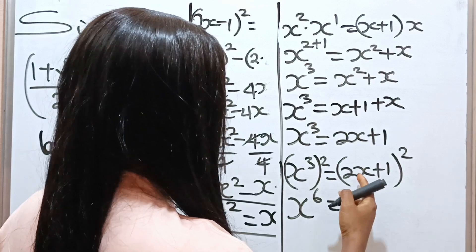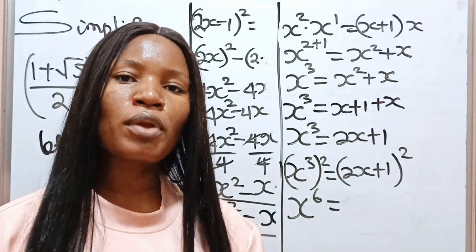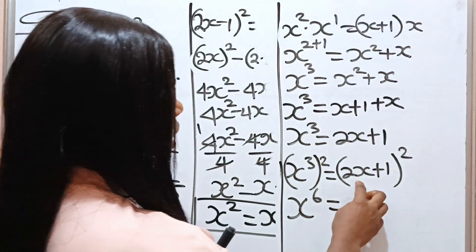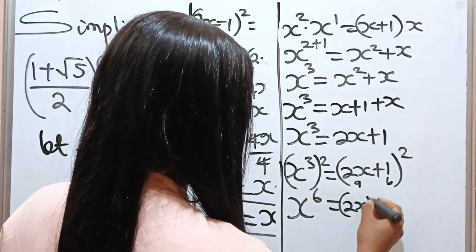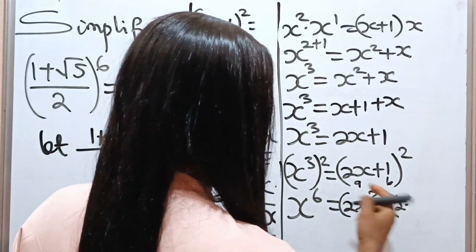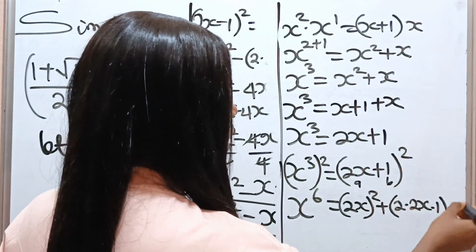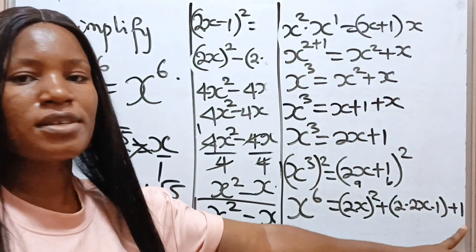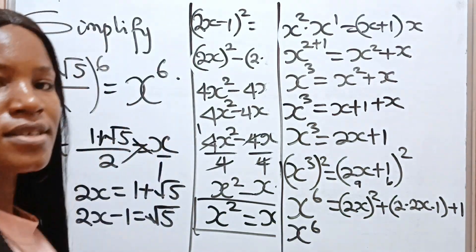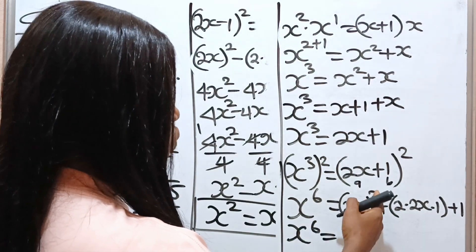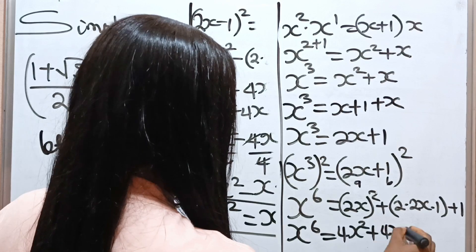x⁶ equals (2x + 1)². Using (a + b)² = a² + 2ab + b², where a is 2x and b is 1: a² is (2x)² = 4x², 2ab is 2 times 2x times 1 = 4x, and b² is 1² = 1. So x⁶ equals 4x² plus 4x plus 1.